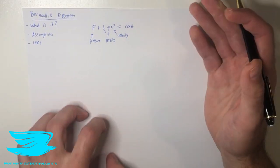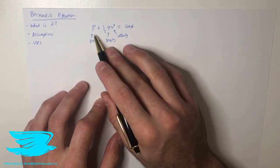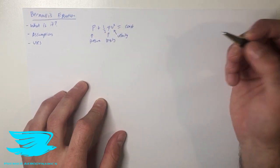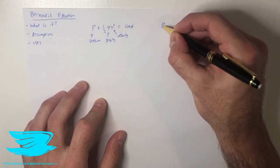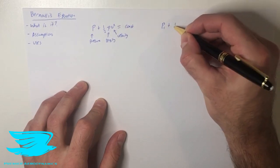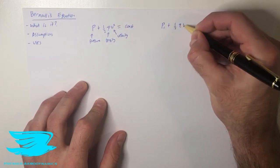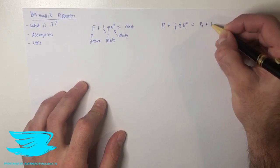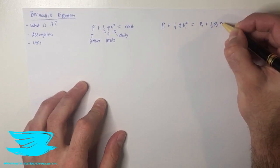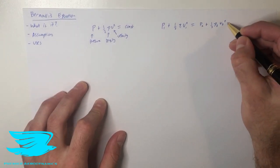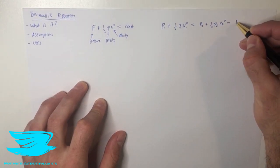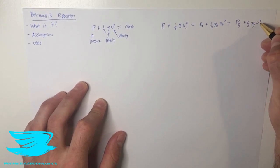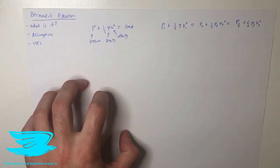What this means is that if we know any two of these properties, we can calculate the third one. So if we have p1, the pressure at one station, plus half times the density at that station times the velocity at that station, this equals the pressure at the second station plus half density there times velocity there squared, and it also equals at the third station — p3 plus half rho v squared three — and so on, for as many stations as you like.